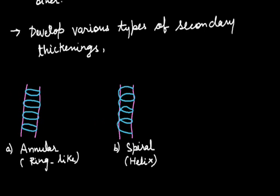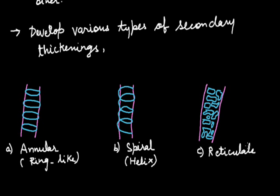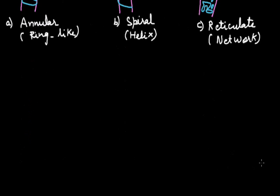The third category is of reticulate thickening. This is the reticulate thickening or also known as it forms a criss-cross network.